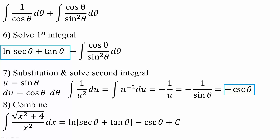For this integral I will use substitution. If u equals sine theta, then du equals cosine theta d theta. This gives the integral of 1 over u squared du, since cosine theta is eliminated. We know 1 over u squared equals u to the negative 2, and integrating gives negative 1 over u. Since u is sine theta, we get negative 1 over sine theta, which equals negative cosecant theta. Combining everything gives ln|sec theta + tan theta| minus cosecant theta plus c.